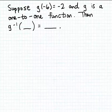So if g of minus six is equal to minus two, in other words when the input is minus six, the matching output is minus two. What that means is for the inverse function, g inverse, when the input is minus two, the matching output is going to be minus six.